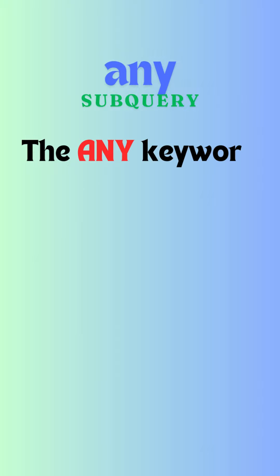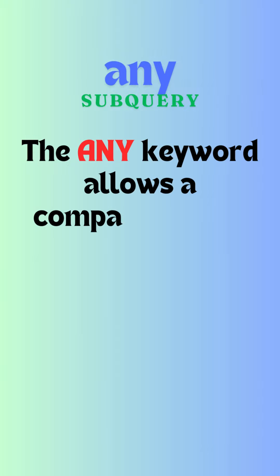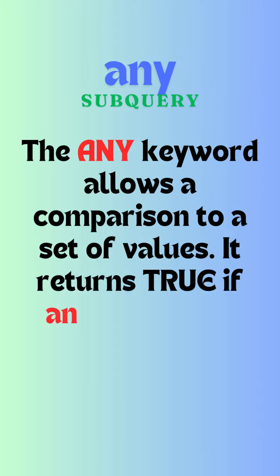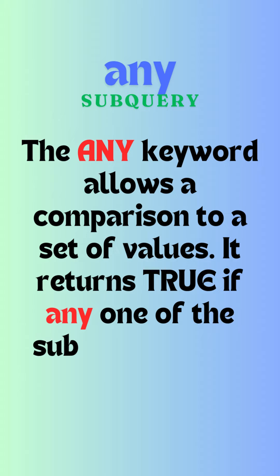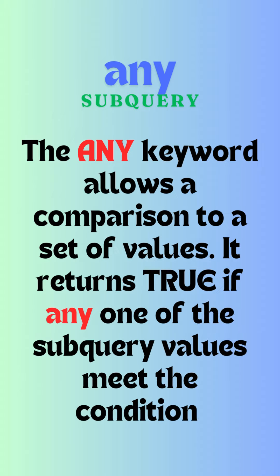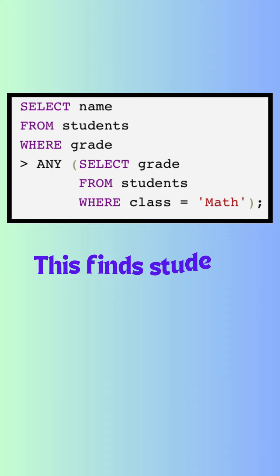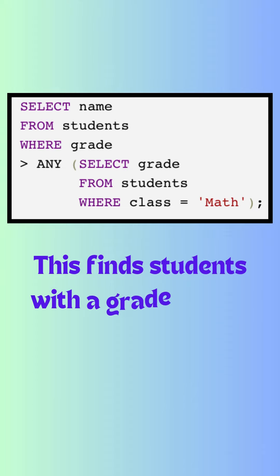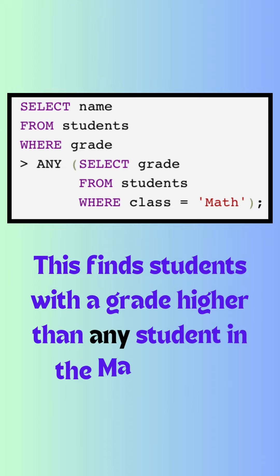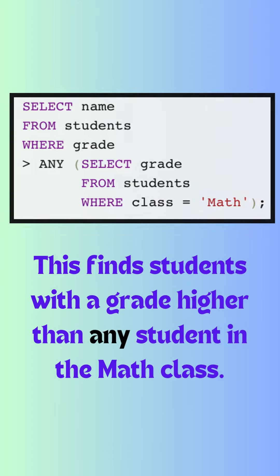The ANY keyword allows a comparison to a set of values. It returns true if any one of the subquery values meet the condition. As you can see in this example, this gives us students with a grade higher than any student in the math class.